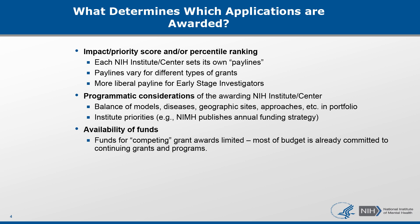Programmatic considerations also factor into which applications get funded. For example, an institute might pass over an application that scored better to fund a worse scoring application because it focuses on a priority area for that institute. Many institutes publish their priority areas on their website, and I really encourage you to take advantage of those resources.